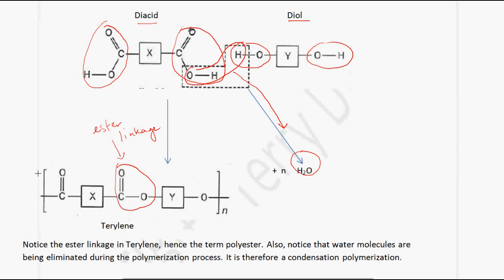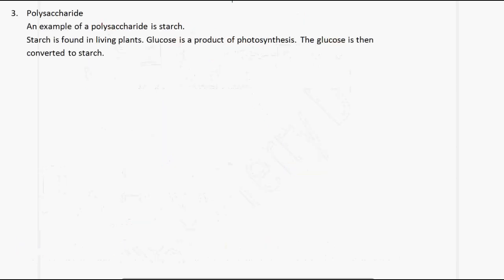This represents the structure of terylene. Another example of a condensation polymer is a polysaccharide. An example of a polysaccharide is starch, which is found in living plants. Glucose is a product of photosynthesis, and the glucose that is produced is then converted into starch.